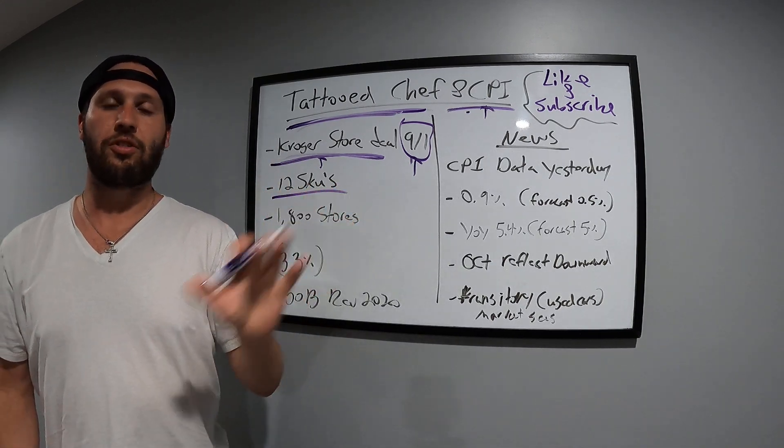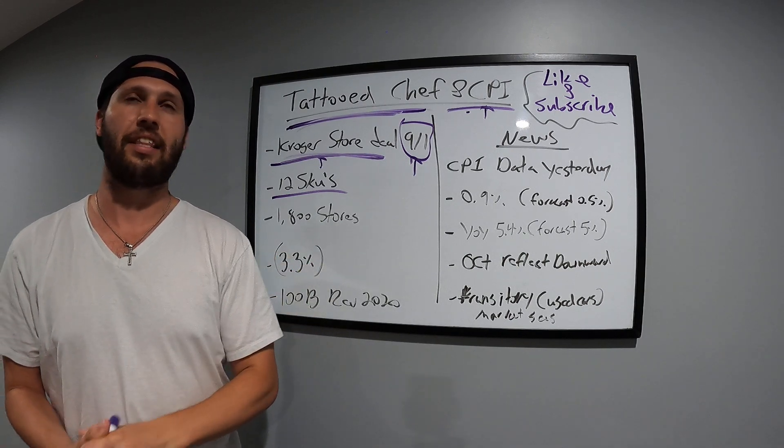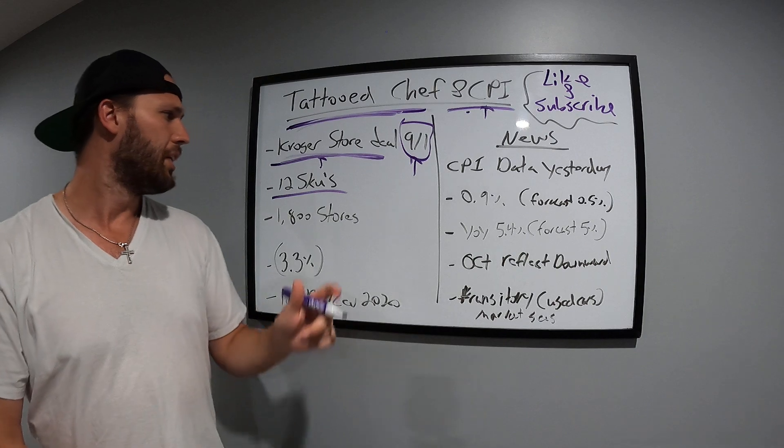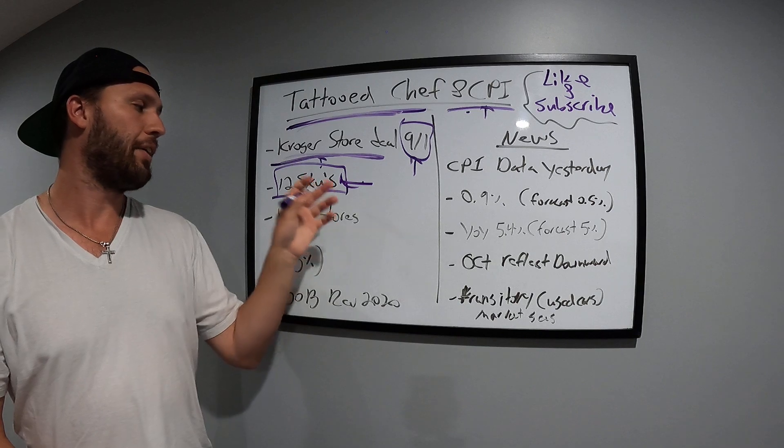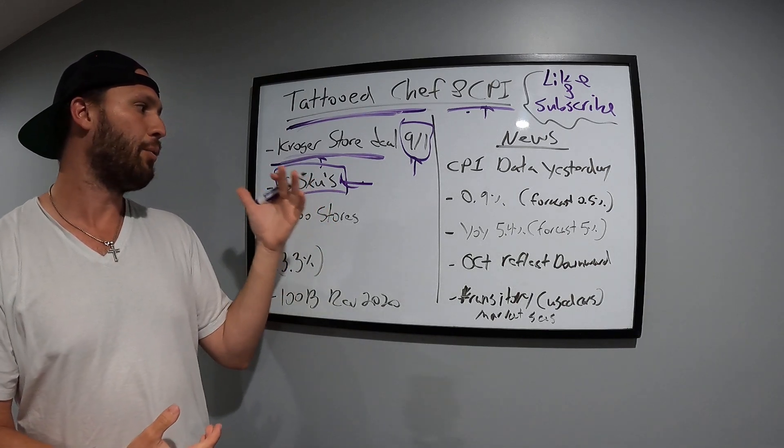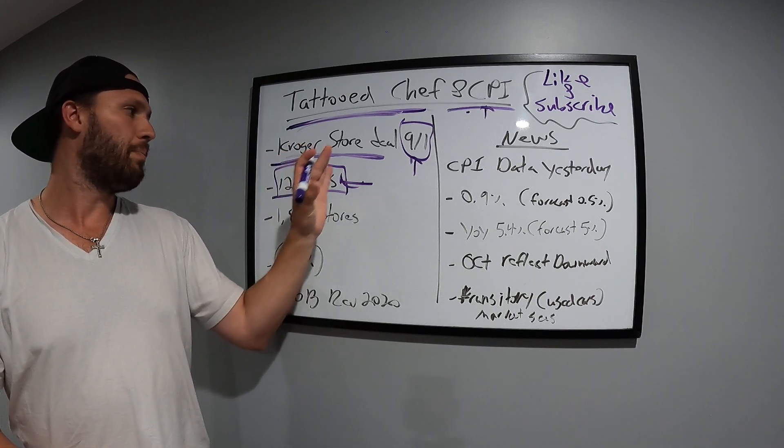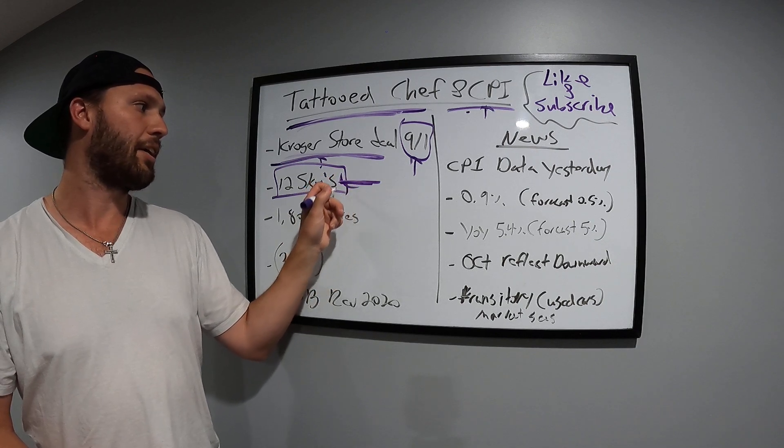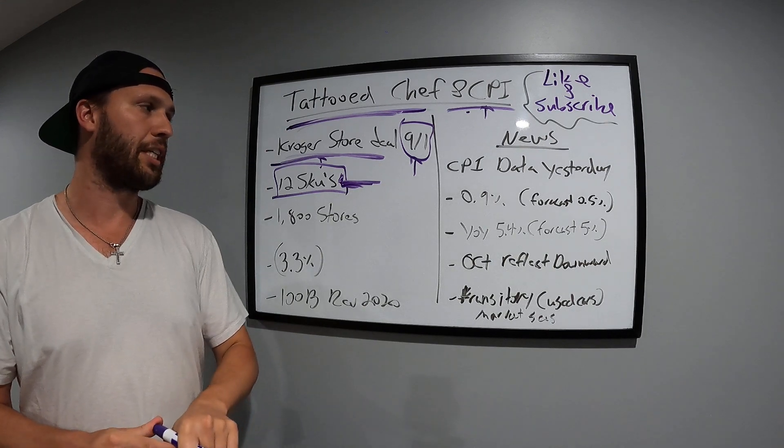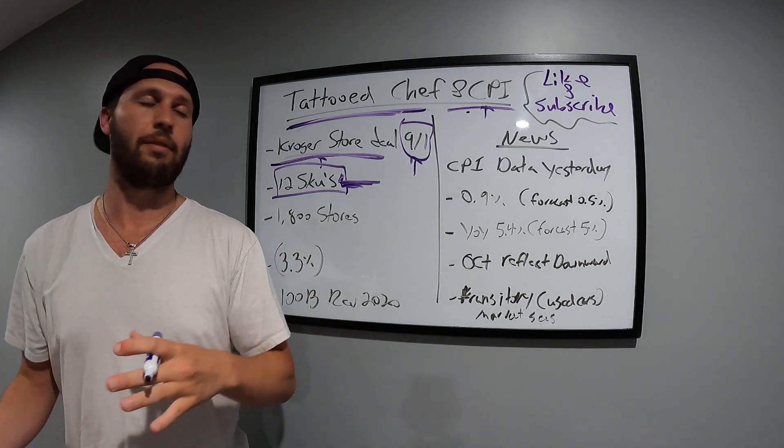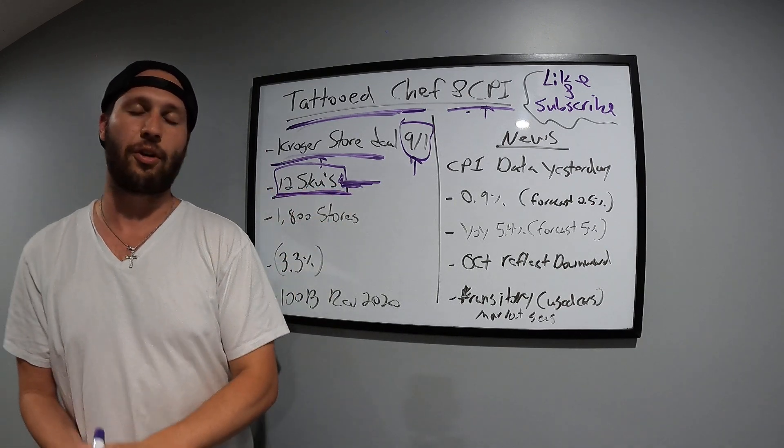My local Costco has one skew, the Ahi Bowl. And then my Target has, I think, four to six skews. So they're starting out off the bat with 12 skews at Kroger. So they're scaling out way more than everyone else. I think once Target, Costco, Sam's Club, and all those guys see how many skews Kroger is bringing up, I guarantee you other stores are going to be like, well, shoot, if they have 12 skews, I need to step up my skews to keep up with the demand that Kroger's going to have. So this is good. They're starting out really big. They have a lot of faith if they're starting out with 12 skews.